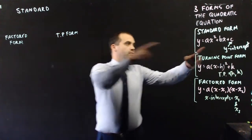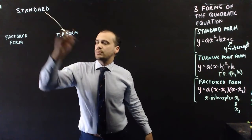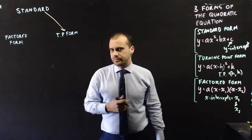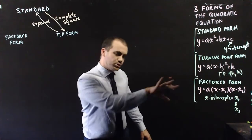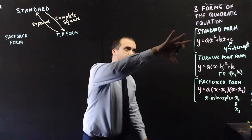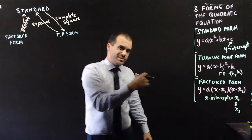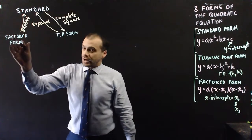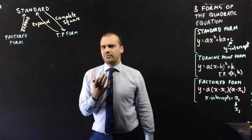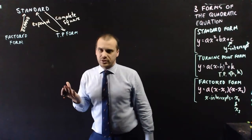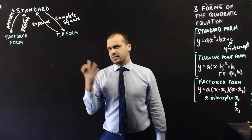If you want to go from standard form to turning point form, you complete the square. If you want to go from turning point form to standard form, you just expand the brackets. This also is true if you want to go from factored form to standard form as well. If you want to go from standard form to factored form, it's pretty obvious that you should factorize — using decomposition or the AC method. So if you want to get from factored form to turning point form, you take the scenic route.